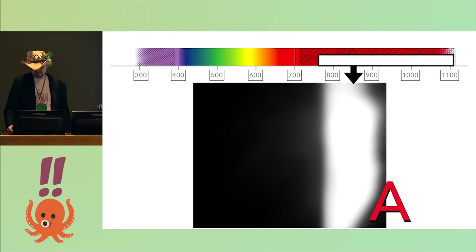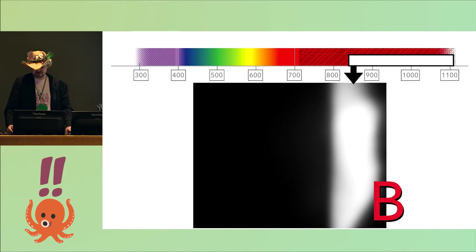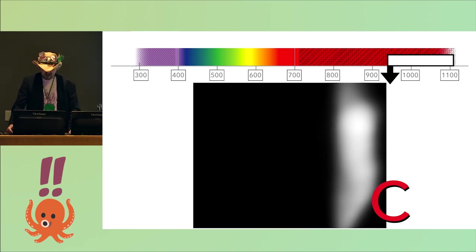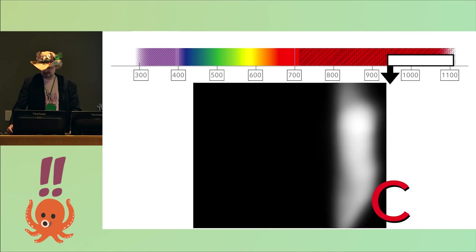I used three of these filters, mounting a different one in front of my lens for each shot. One allows 760 to 1,100 nanometers to pass — we'll call the result image A. One allows 850 to 1,100 to pass — we'll call this image C. I took those photos without moving the camera, the light, the subject, or changing any of the settings on the camera. It was all just the rainbow I created using a xenon bulb and a simple prism.